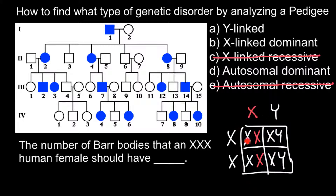And 100% of the males would be phenotypically and genotypically normal, because they would get the X chromosome from their mother and the Y chromosome from the father. But when we look at our pedigree, we see that this male has three affected daughters. So it cannot be X-linked recessive — we cross out that possibility.